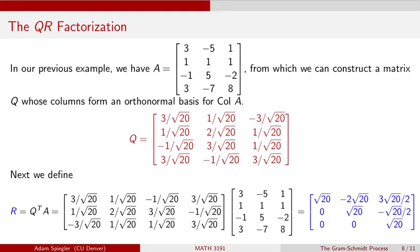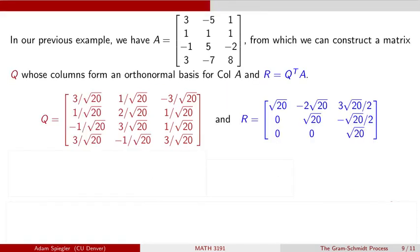So here, relating to this matrix A, we're able to identify a matrix Q by finding an orthonormal basis for the column space of A. And now I just define this matrix R, which is the product of Q transpose and A.